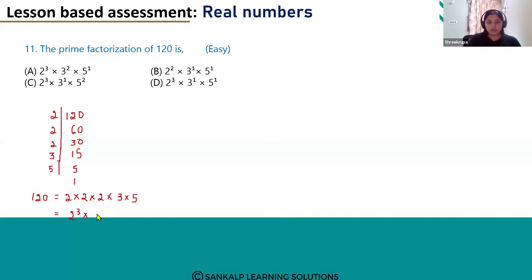So the correct answer for this question is option D: 2 power 3 into 3 power 1 into 5 power 1.